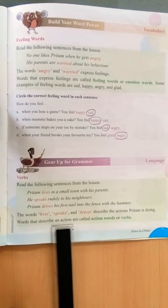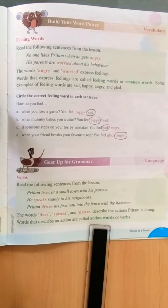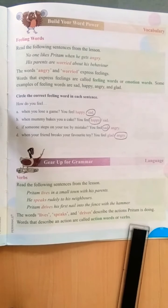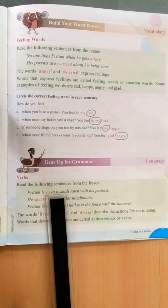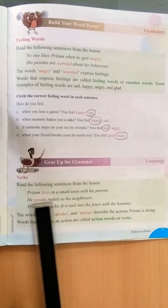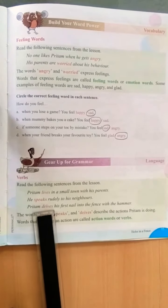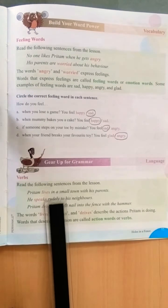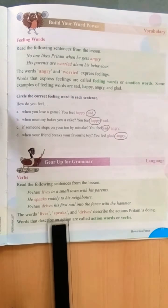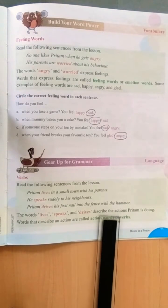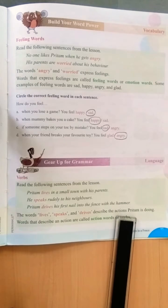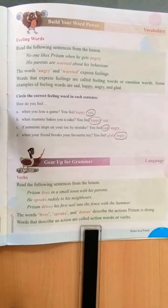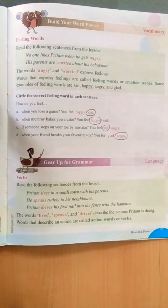Words that describe an action are called action words or verbs. Words like 'Pritham leaves', 'he speaks', 'Pritham drives'. Here leaves, speaks, drives are describing the actions. So verbs are also called as action words or verbs.